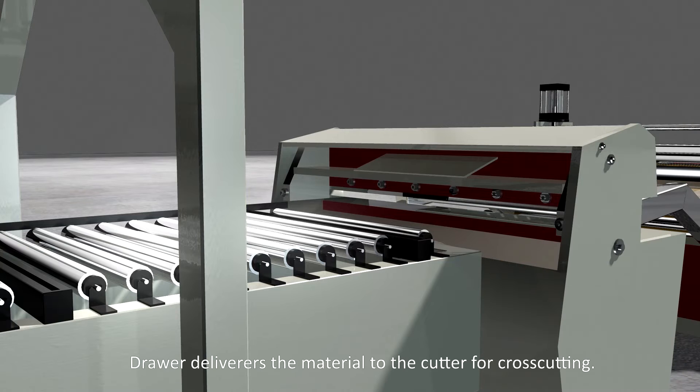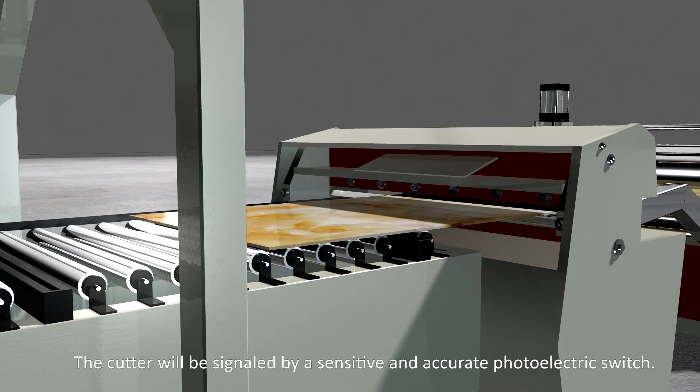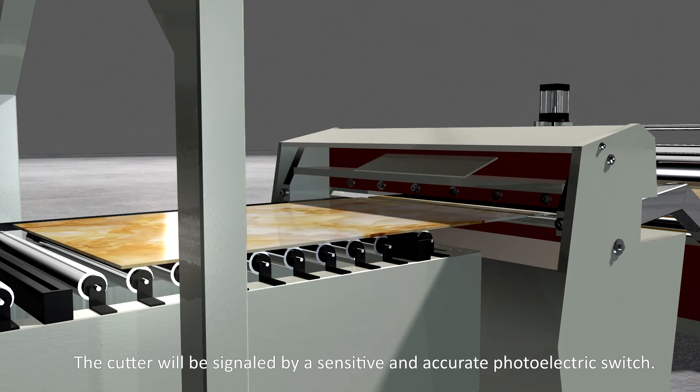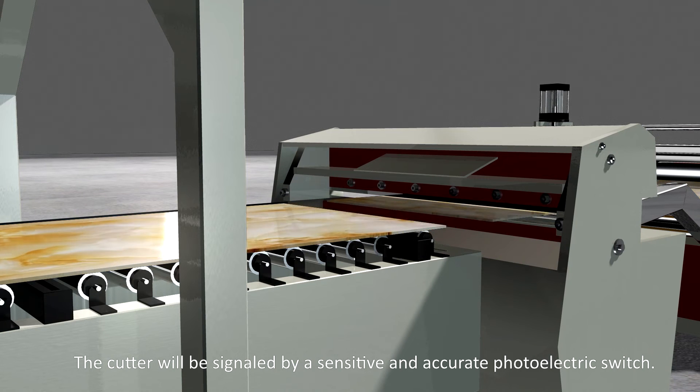Cutter. Drawer delivers the material to the cutter for crosscut. The cutter will be signaled by a sensitive and accurate photoelectric switch.